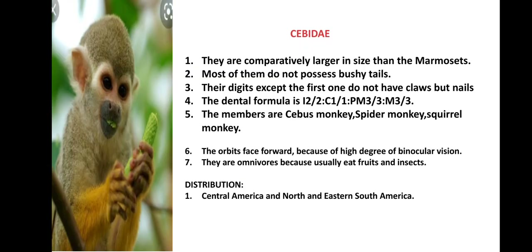The next family is Cebidae. Distribution: Central America, North, East, and South America. They are comparatively larger in size than marmosets. Most do not possess a bushy tail. Digits except the first one have nails rather than claws. Dental formula: 2.1.3.3 / 2.1.3.3. Examples include capuchin monkey, spider monkey, and squirrel monkey. They are diurnal. The eyes face forward due to a high degree of binocular vision. They are omnivorous, usually eating fruits and insects.